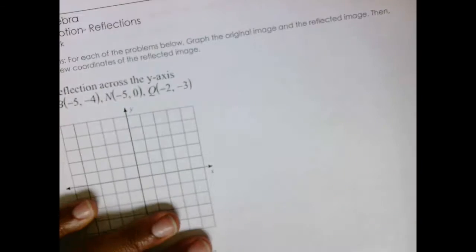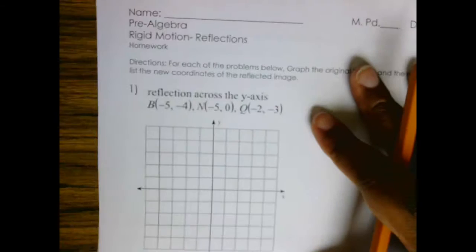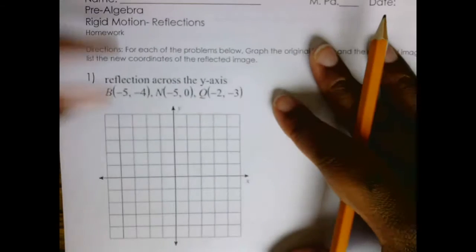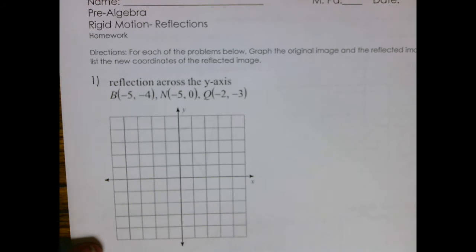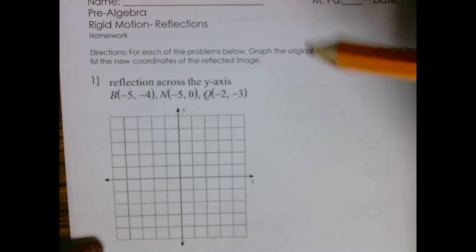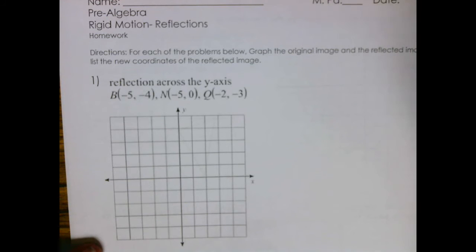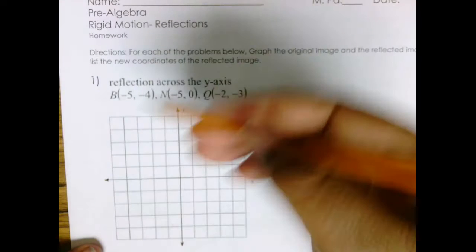Now let's look at one of our questions from the homework. The directions tell me that for each problem below I should graph the original image and the reflected image, then list the new coordinates of the reflected image. So the first thing I want to do is graph the original image.